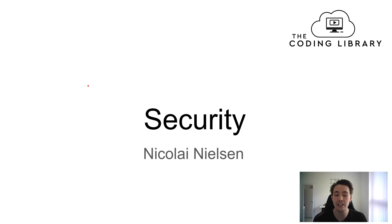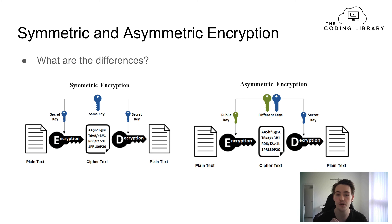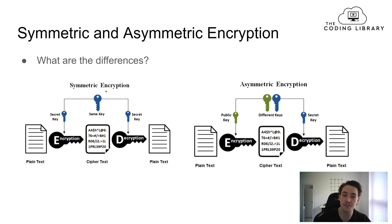Hey guys, it's a new video in this Linux tutorial. In this video we're going to talk about security on the internet and security in Linux. First of all, we're going to talk about symmetric and asymmetric encryption, and when we want to encrypt an internet connection between two endpoints — what is the difference between symmetric and asymmetric encryption?